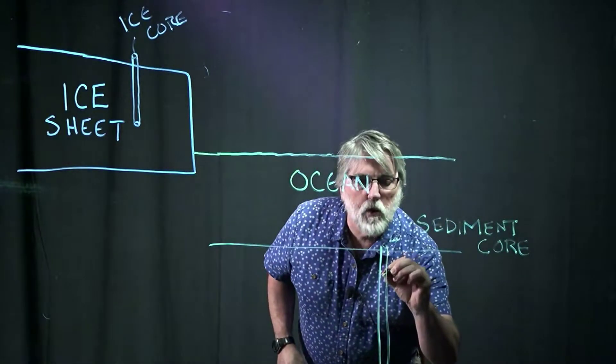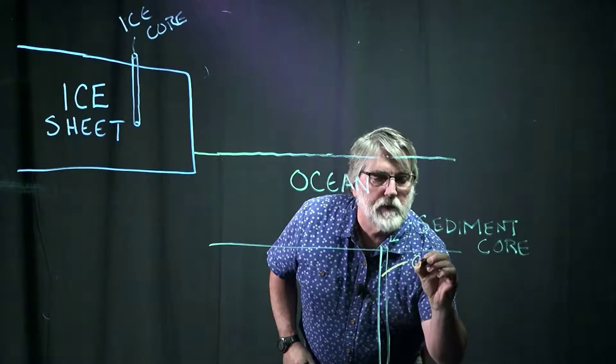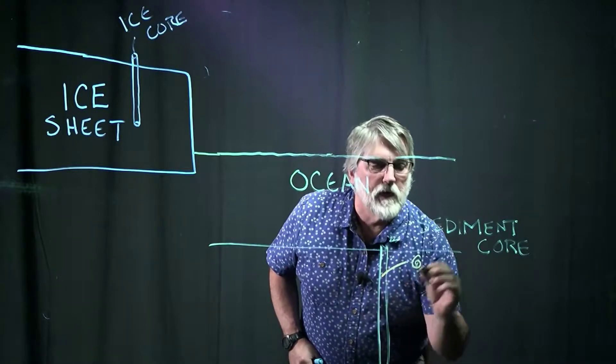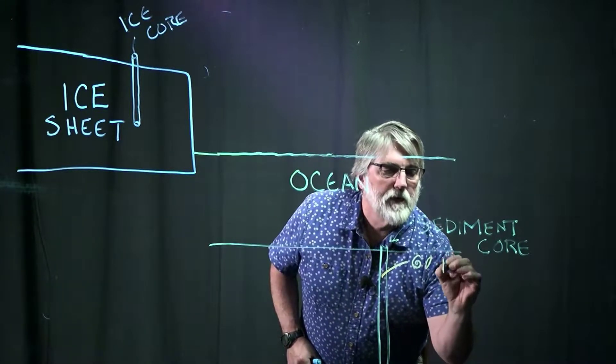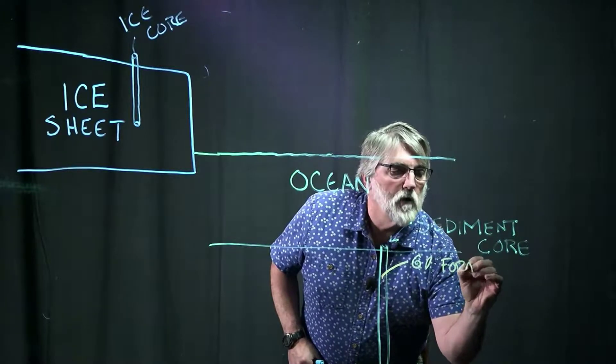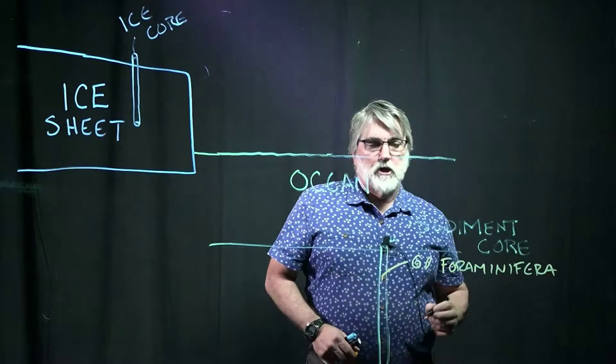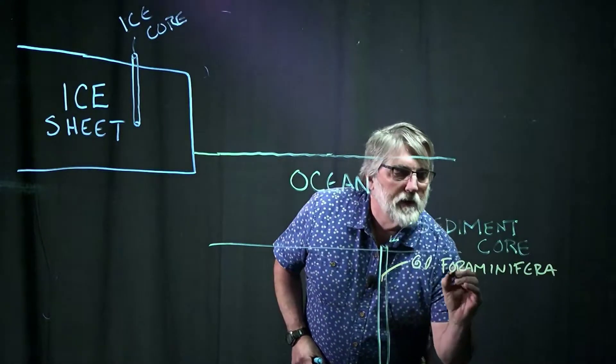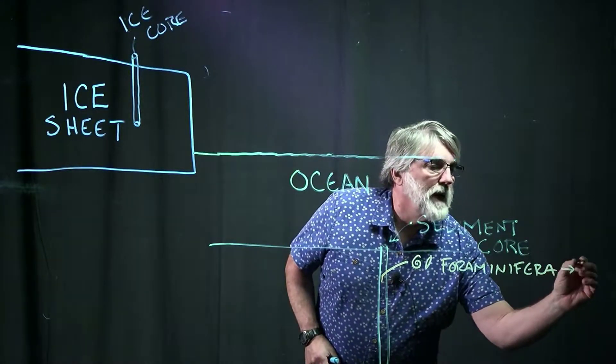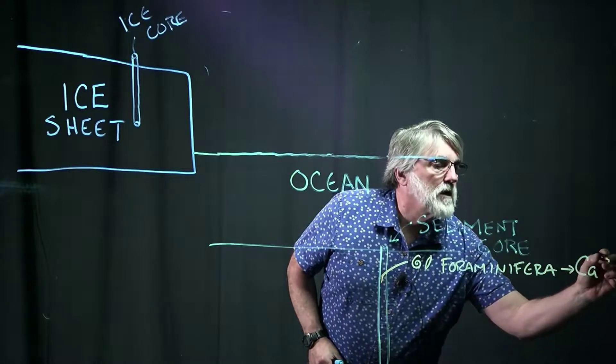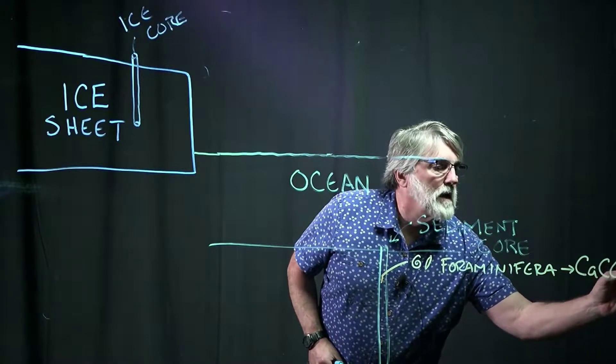Now where do we get the isotopic information? Well, it turns out that in these cores are little critters - I'm going to draw one here, they don't even look like that, maybe they look more like this - that are called foraminifera, or forams for short.